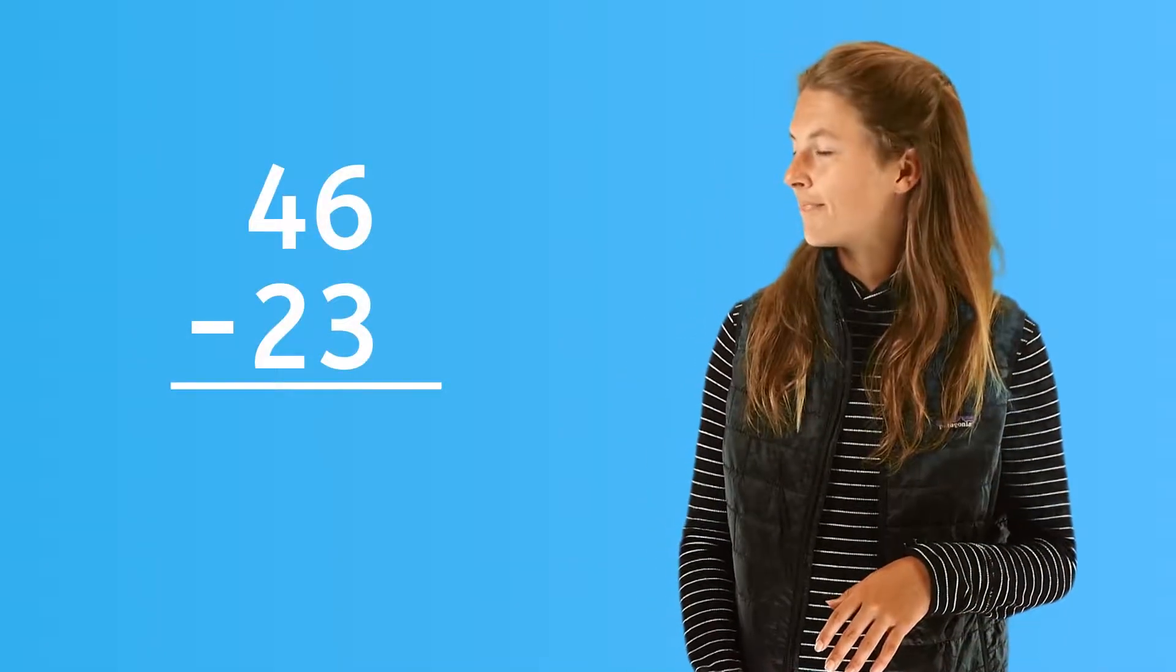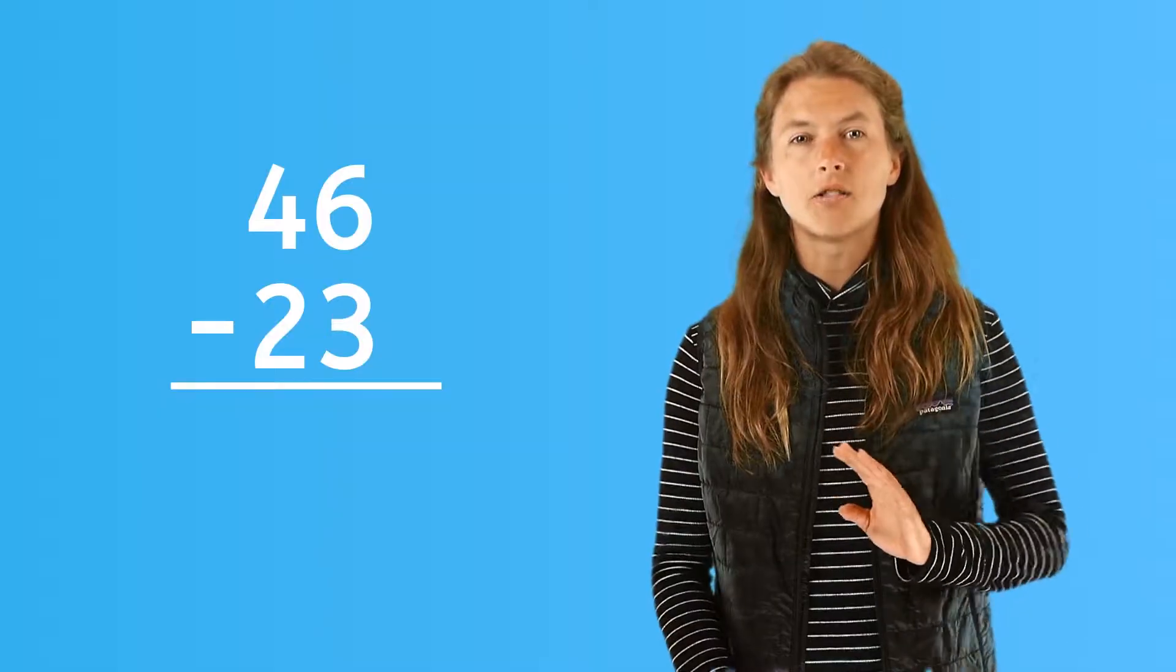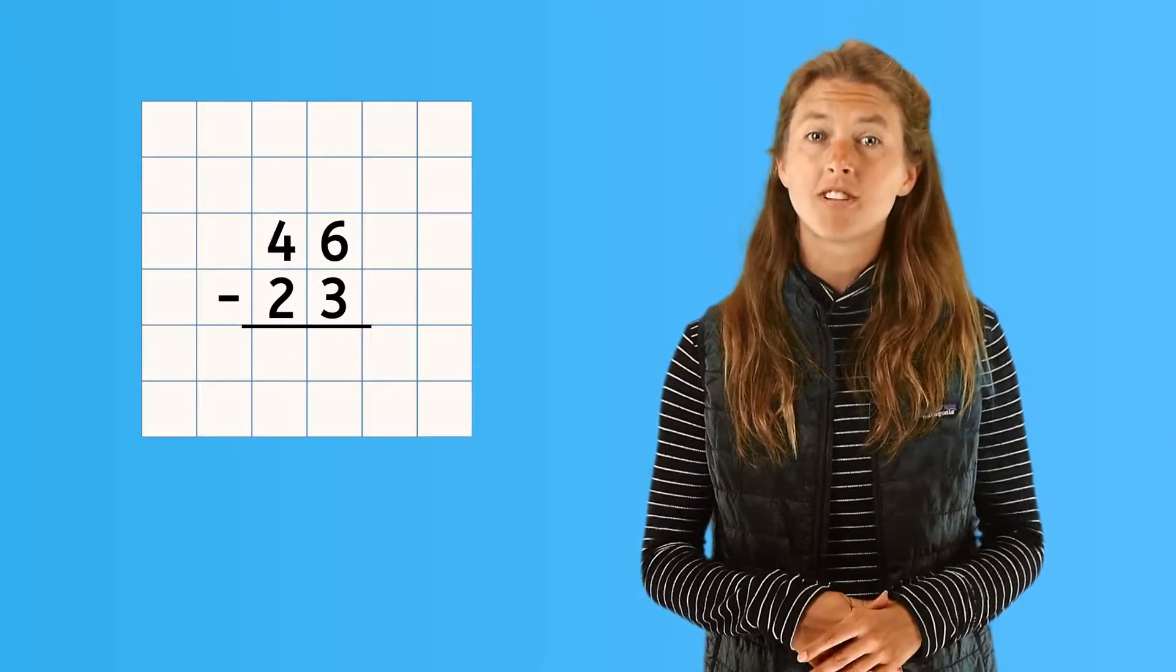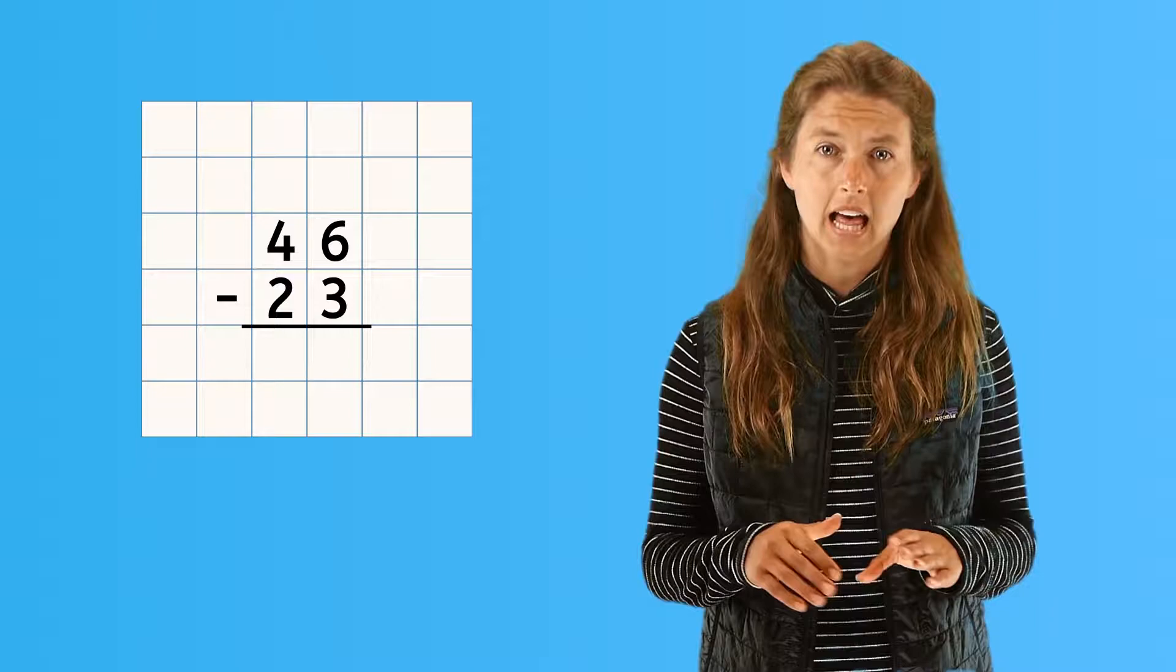Okay, take a look at the problem here. Notice it is written neatly with the place values lined up. Just like in addition, this is very important in two-digit subtraction. Graph paper can be really useful in helping you keep the numbers lined up.